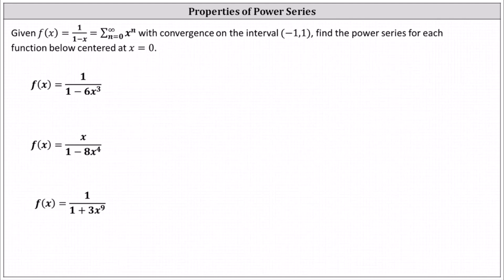Given f of x equals one divided by the quantity one minus x, equals the power series — the sum from n equals zero to infinity of x to the power of n — with convergence on the open interval from negative one to one, find the power series for each function below, centered at x equals zero.